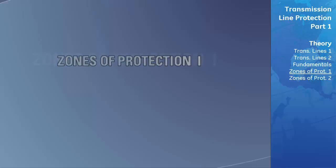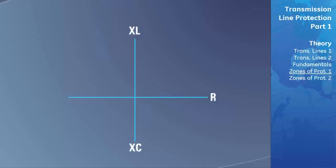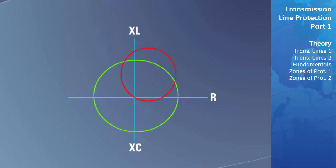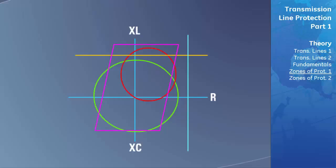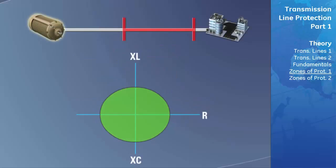To program distance relays, you need to configure the impedance of the line where any impedance less than this value will indicate a faulted line. This is done in modern distance relays by creating zones of operation on the RX diagram. If the impedance calculated ever falls within this zone, the relay will trip. These zones fit into the following operating characteristics: an impedance zone, an admittance or Mho circle zone, a reactance zone, a resistance zone, and a quadrilateral zone.